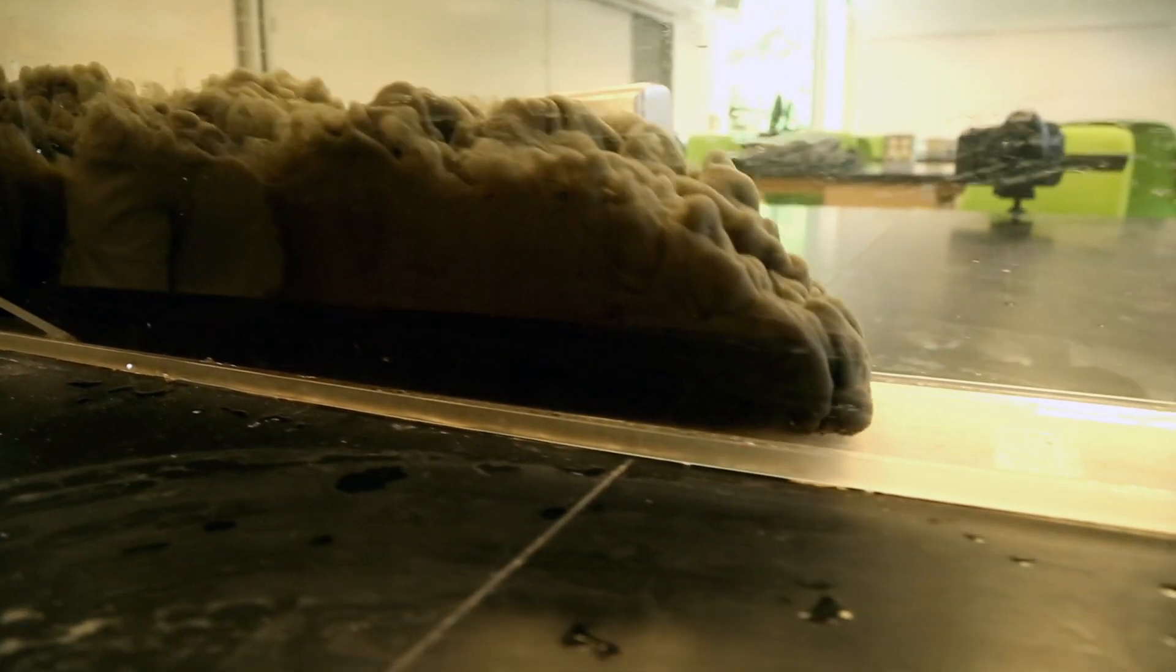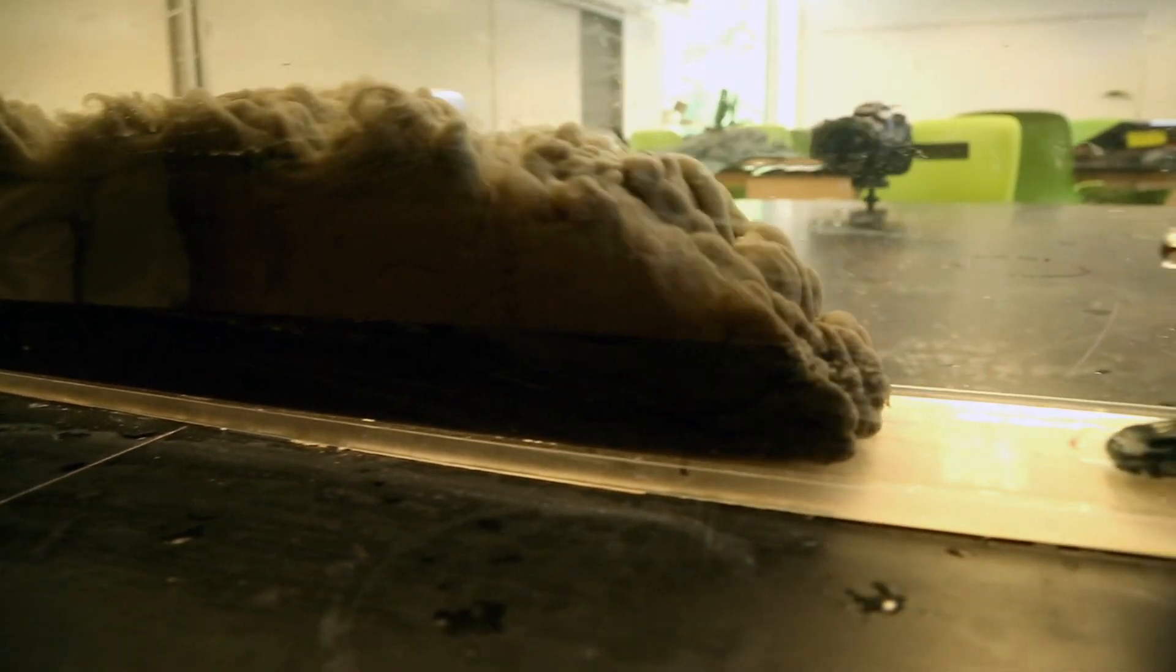This first example is a turbidity current running down a ramp. You can see clearly the turbulent head, the body, and the tail behind.